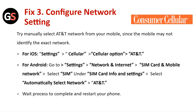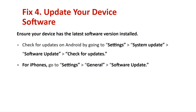Fix 3: Configure the network settings. Try manually selecting the AT&T network from your mobile since the phone may not identify the exact network. For iOS, go to Settings and Cellular, then select the Cellular option and AT&T. For Android, go to Settings, then Network and Internet, select the SIM card and Mobile Network, and select your SIM under SIM card information and settings. Select the automatically selected network and choose AT&T. Wait for the process to complete and restart your phone.